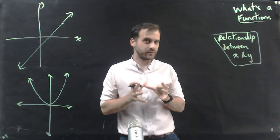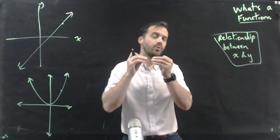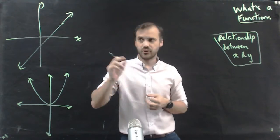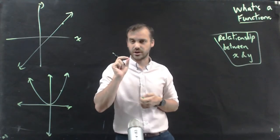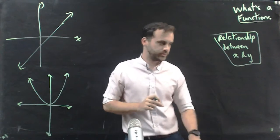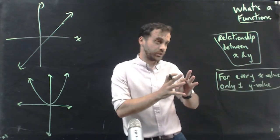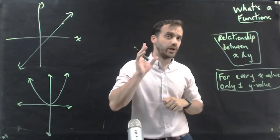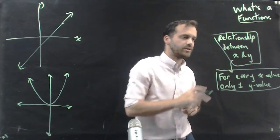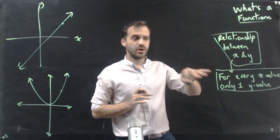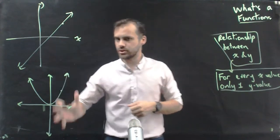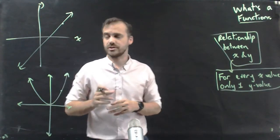For something to be a function, it has to fulfill one more criteria. And that is, for every x-value, there can only be one y-value. Now you know what a function is. A function is a relationship between x and y, true, but it also must fulfill this criteria: for every x-value, there is only one y-value. If we look at these two examples, they are both functions.